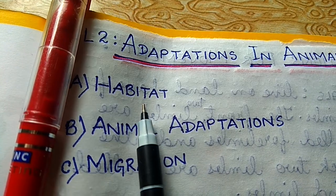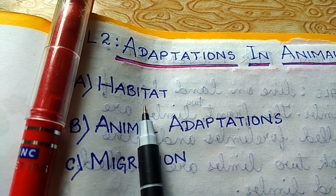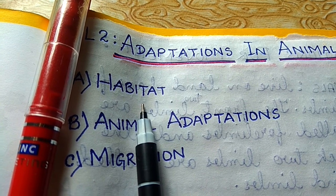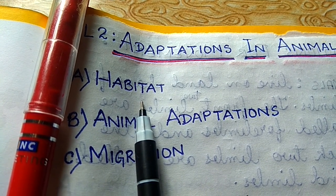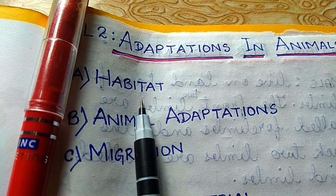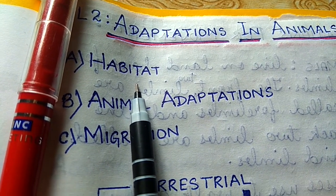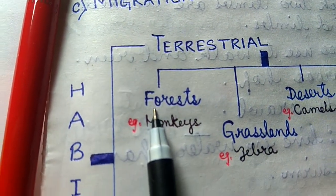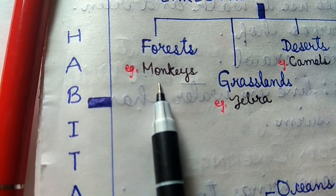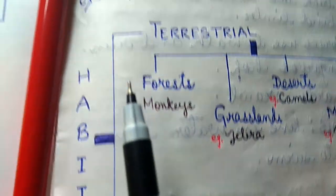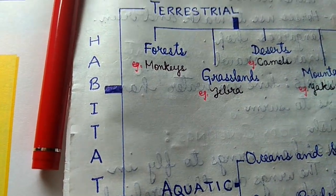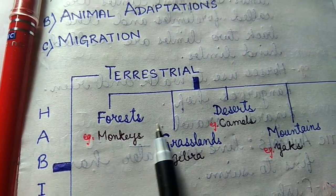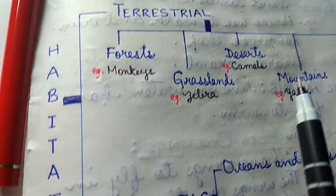The place where an animal lives, feeds and reproduces is called its habitat. Habitats are of different kinds. Habitats are broadly classified into terrestrial and aquatic, and they are further divided into different types.